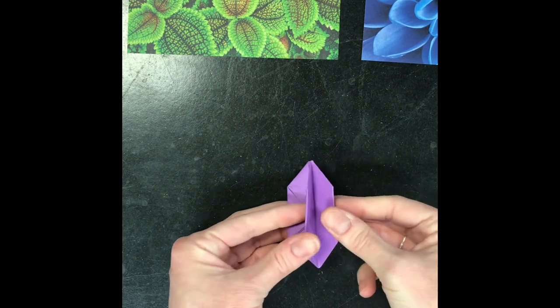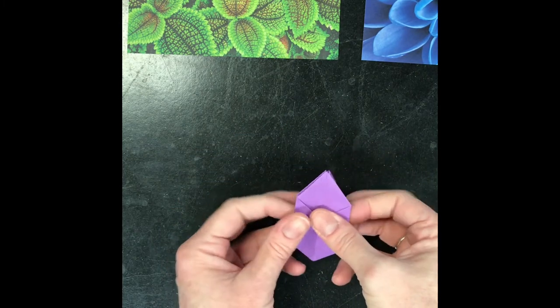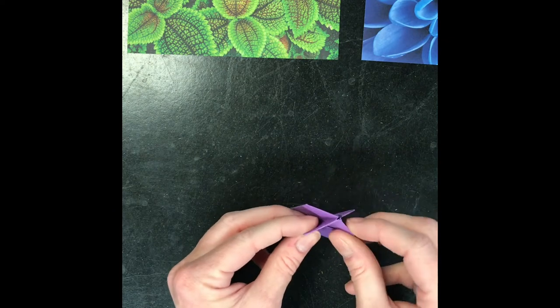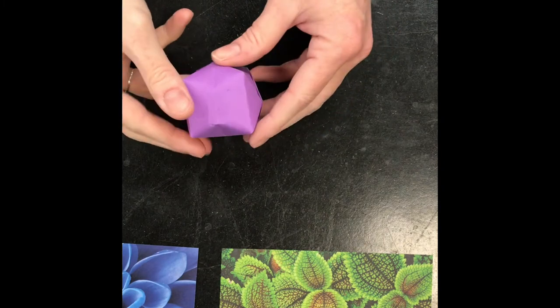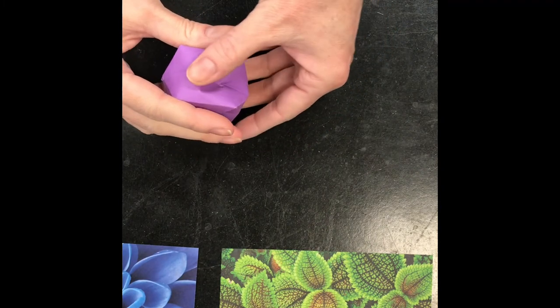And what that's going to do is we've kind of got four little spinny things and a hole right in the middle. And if you blow into that hole, it's going to inflate and give you this kind of cube shape.